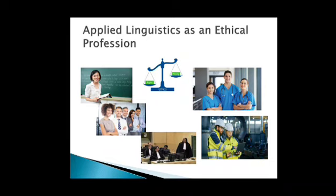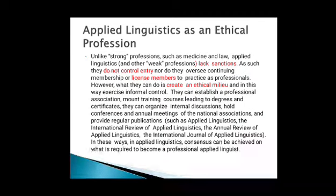Applied Linguistics is an ethical profession. Compared to strong professions such as medicine and law, Applied Linguistics is considered a weaker profession. As such, it does not control entry nor oversee continued membership or licensed practice. However, what it can do is create an ethical milieu and exercise informal control. It can establish a professional association, mount training courses leading to degrees and certificates, organize internal discussions, hold conferences and annual meetings, and provide regular publications such as Applied Linguistics, The International Review of Applied Linguistics, The Annual Review of Applied Linguistics, and The International Journal of Applied Linguistics. In this way, consensus can be achieved on what is required to become a professional applied linguist.